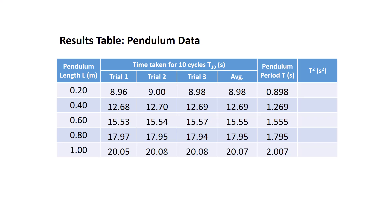The final column in this table is to calculate the period squared, and the reason for this will become evident shortly. So we take our pendulum period for every particular length and square that value. I do that for all of the five pendulum lengths. There's my full data set for the pendulum experiment.